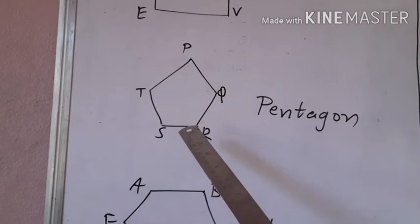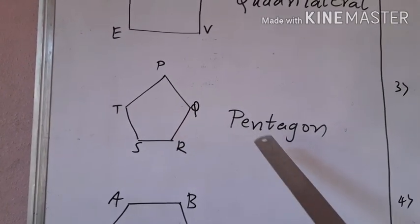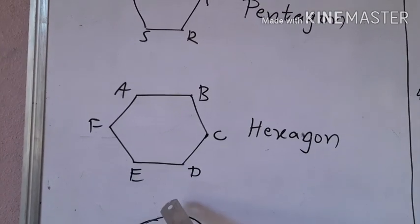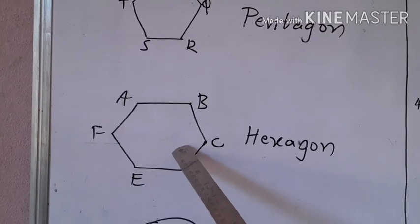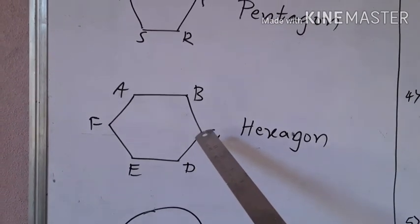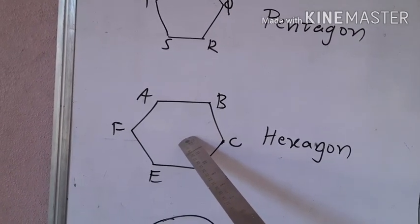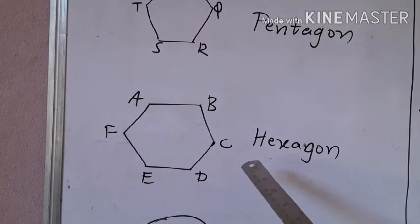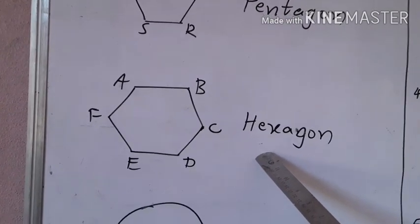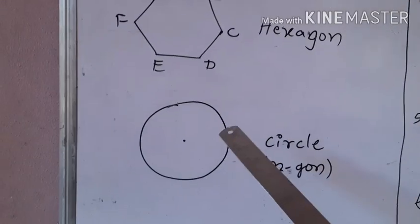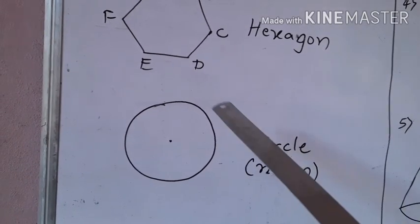The pentagon named PQRST has 5 sides and is a closed plane figure, so it is called a pentagon. A polygon with 6 sides is called a hexagon. If any closed plane figure has 7 sides it is called a heptagon, with 8 sides it is called an octagon, with 9 sides it is called a nonagon, and with 10 sides it is called a decagon. When the number of sides goes on increasing, the polygon tends to become a round shape or a circle.